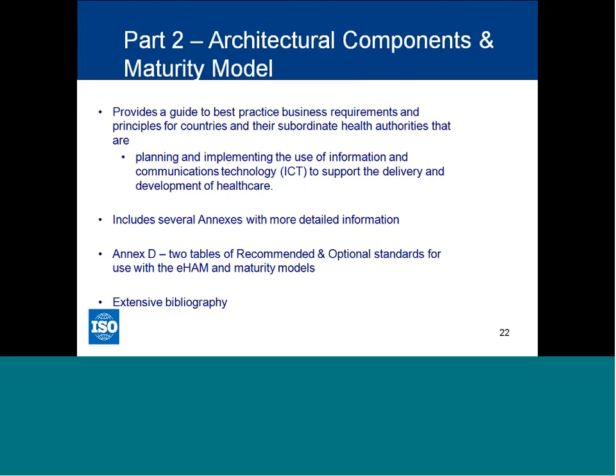Part two is where the substantive content came in — best practice guides for countries planning and implementing systems to support healthcare delivery. The document totals about 160 pages and includes extensive annexes with more detail, including summary tables of recommended and optional standards for use with the model and the maturity model, as well as an extensive bibliography. Each section of the document has a specific subsection referring to applicable standards, cross-references, and dependencies.